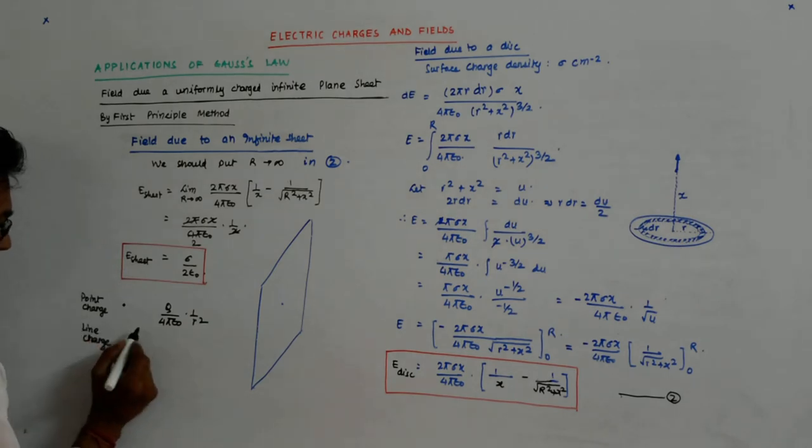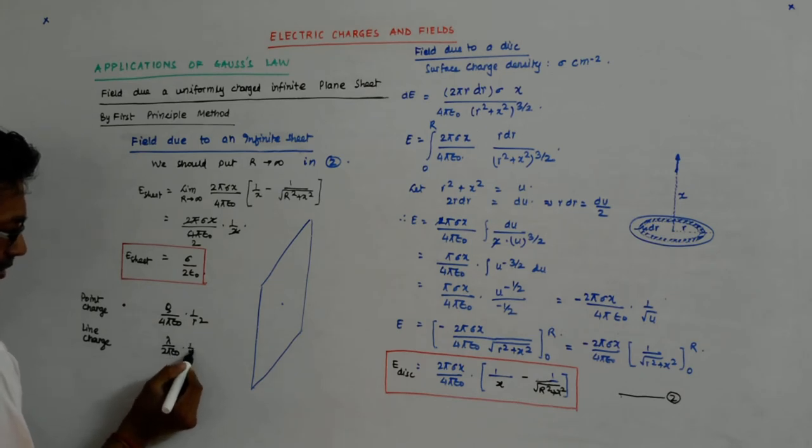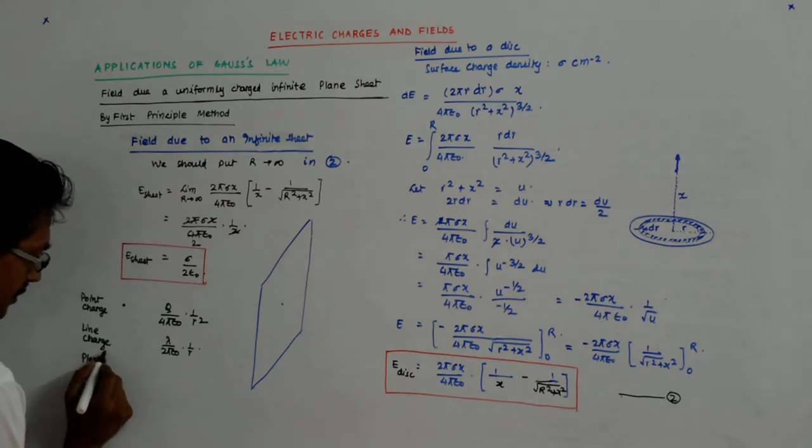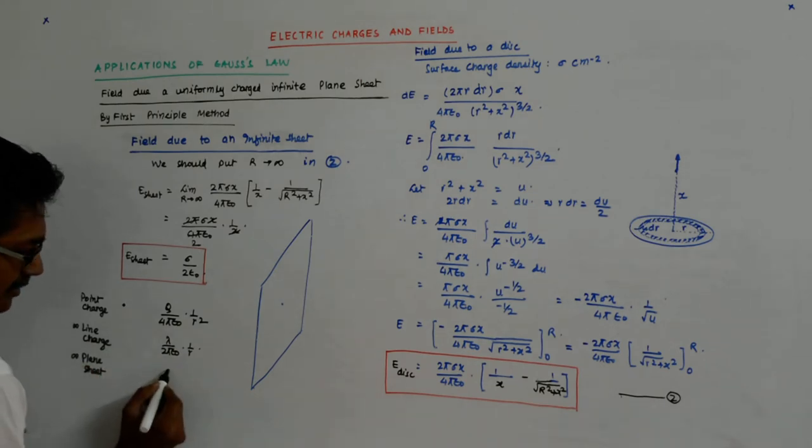A line charge, an infinite line charge, it came out to be lambda upon 2π epsilon_0 times 1 by r. And for a plane sheet, an infinite plane sheet, it is sigma upon 2 epsilon_0.